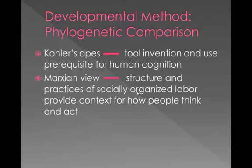Vygotsky drew heavily from Kohler's works with apes. We talked about Kohler back in Chapter 1, and we had videos of Kohler's apes using tools to accomplish what they need to accomplish. Vygotsky suggested that if apes could use tools, then humans also should have to invent and use tools in order for us to see evidence of human cognition. He was also a Marxist, born in Russia during Marxist times, so he had to acknowledge the structure and practices of socially organized labor, which he said provided a context for how people think and act.